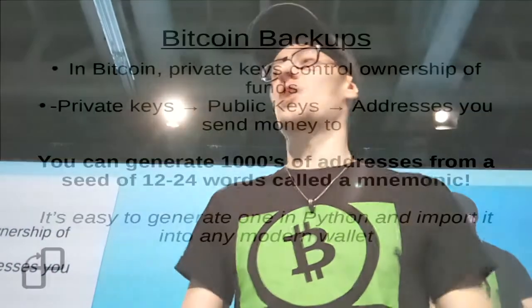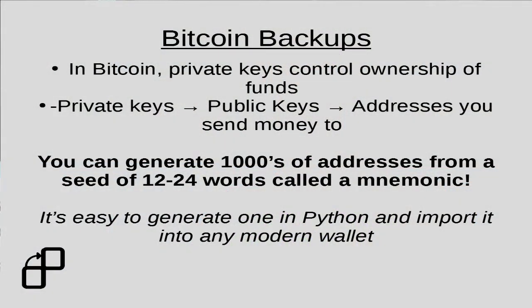So in Bitcoin, private keys control ownership of the funds. You have private keys that derive public keys using elliptic curve cryptography, and these are used to generate addresses that you send the money to.